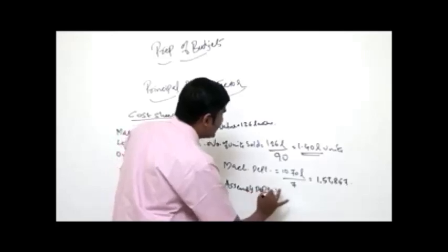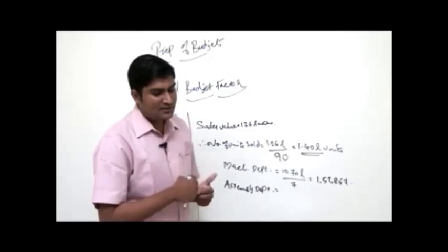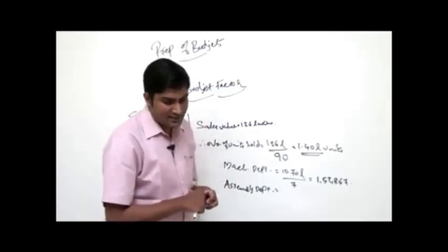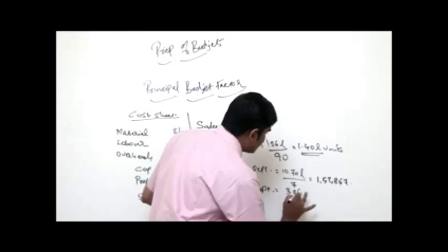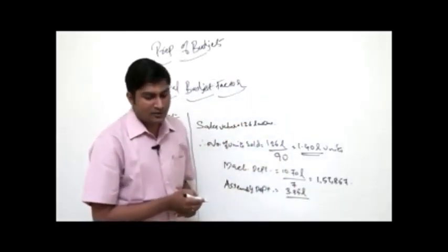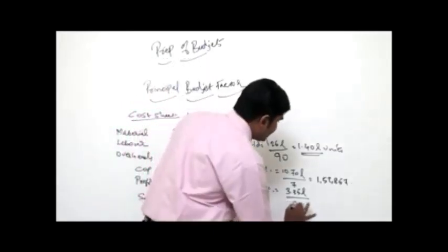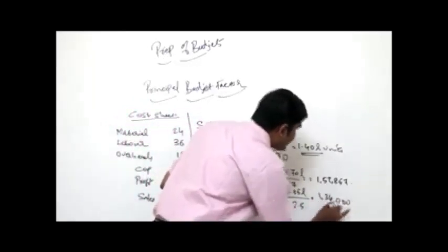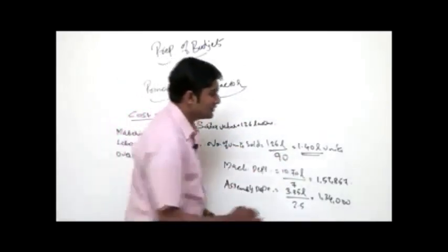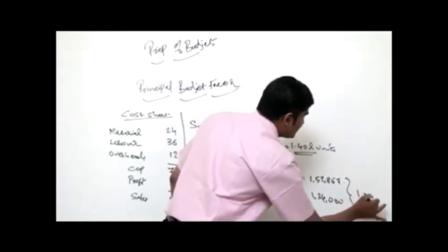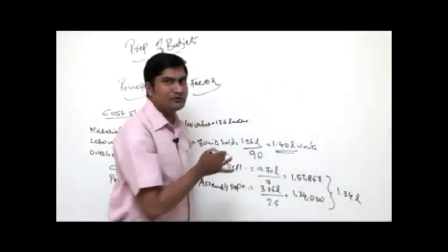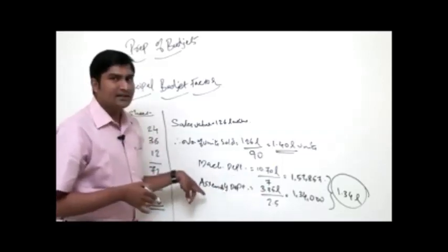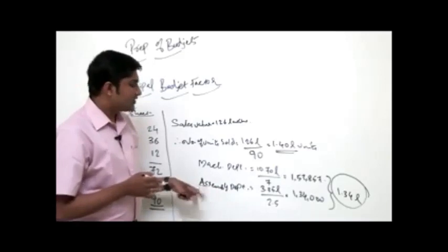For the assembly department, average of last 3 years: (3,45,000 + 3,20,000 + 3,40,000) ÷ 3 = 3,35,000 hours normal capacity. Dividing by 2.5 hours per unit: 3,35,000 ÷ 2.5 = 1,34,000 units maximum. The minimum figure across departments is 1,34,000 units, from the assembly department which is the bottleneck activity.